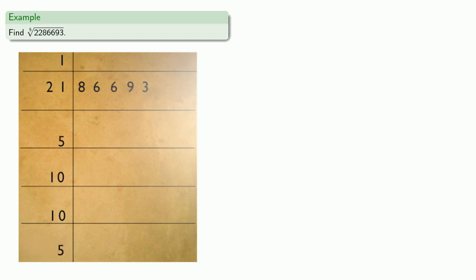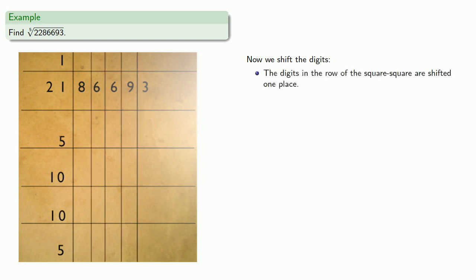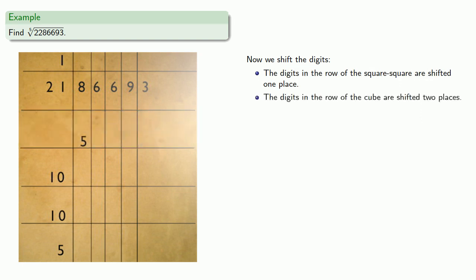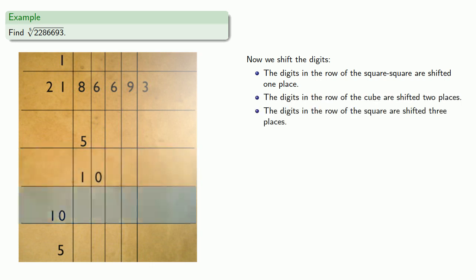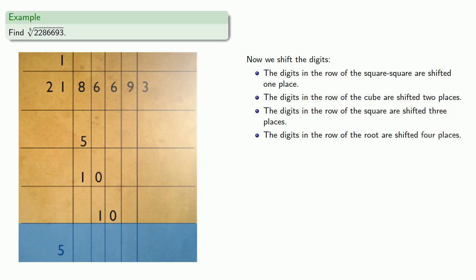And now we're going to shift our digits. To keep everything straight, we'll put down some placeholder lines. The digits in the row of the square square are shifted one place, the digits in the row of the cube are shifted two places, the digits in the row of the square are shifted three places, and the digits in the row of the root are shifted four places. We can get rid of our placeholder lines as long as we keep in mind that there are placeholder zeros.